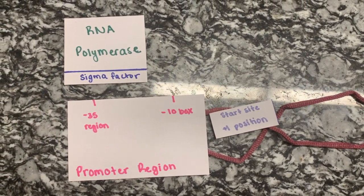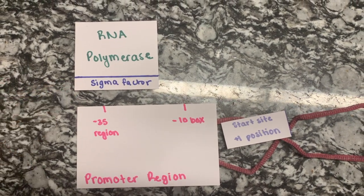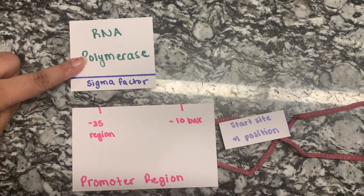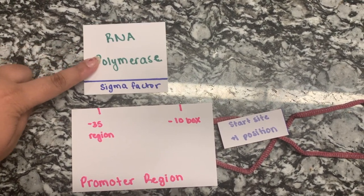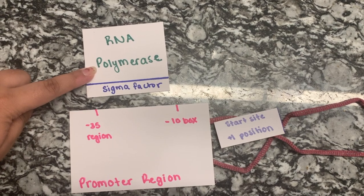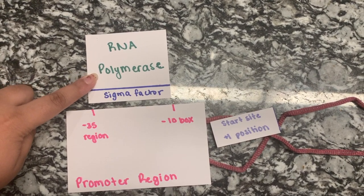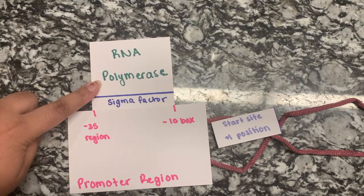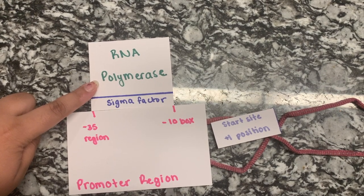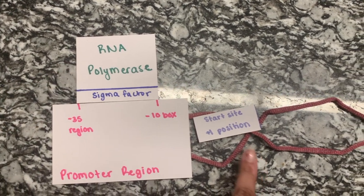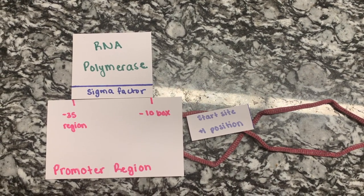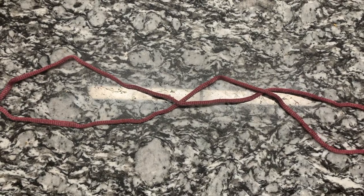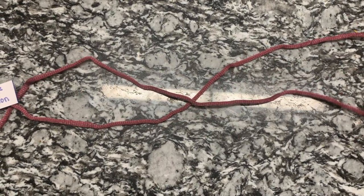Before transcription begins, our RNA polymerase will include a sigma factor as one of its subunits. The RNA polymerase plus sigma factor compound is referred to as a holoenzyme, essentially meaning that it is whole with the sigma factor. The negative 35 and negative 10 regions of the promoter are recognized by the sigma factor and RNA polymerase, helping to position the RNA polymerase at the start site of transcription on the DNA strand. The start site occurs at the plus 1 position.